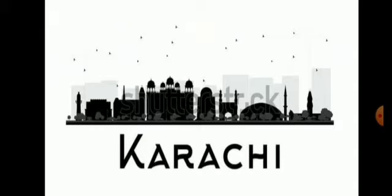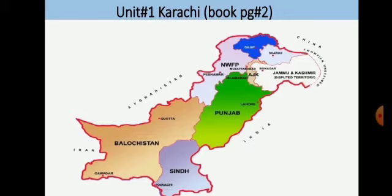Our first lesson is about Karachi. Children, you know that we live in the city Karachi. Pakistan has four provinces: Sindh, Punjab, KPK and Balochistan. Karachi is in the province of Sindh. Today we will talk about Karachi, the city in which we live and which is also called the city of lights.